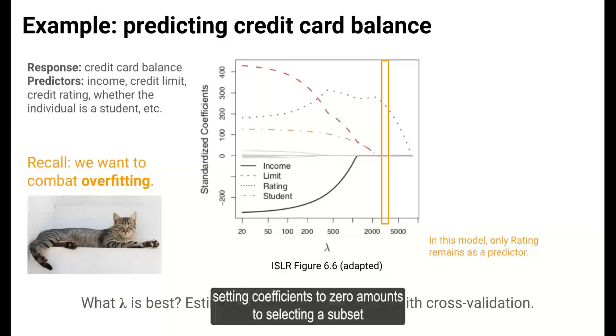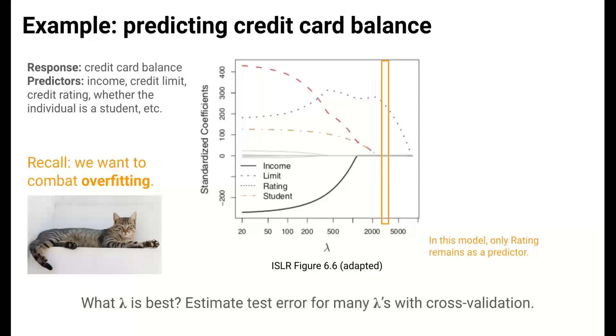As a reminder, setting coefficients to zero amounts to selecting a subset of variables to include, which is a way to combat overfitting. We can fight overfitting by not letting ourselves use weak predictors.